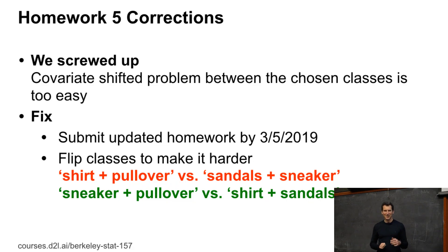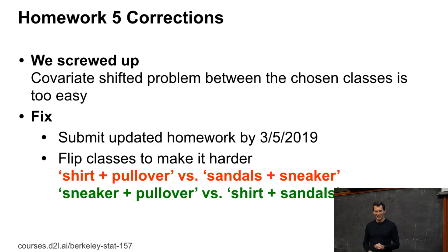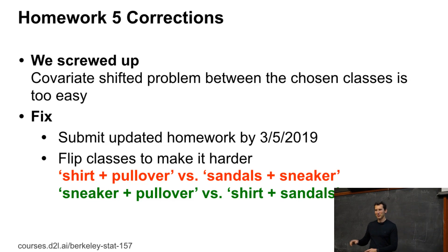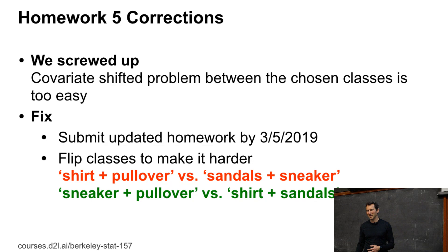Here's the fix, which will require minimal code changes in your homework. You mix cold-weather versus warm-weather clothes — sneaker plus pullover versus shirt plus sandals. So you now have one top and one bottom item versus another top and bottom item, and that ought to be a considerably harder problem to solve. This is the minimal fix. It's unreasonable to expect you to get this right by end of day, and since there's no homework next week anyway, you have time until March 5 to submit the updated homework.